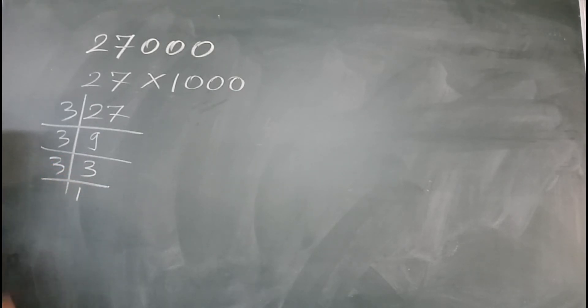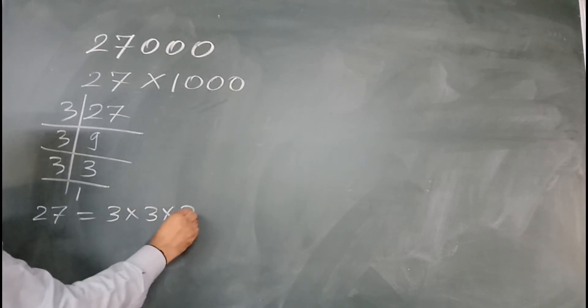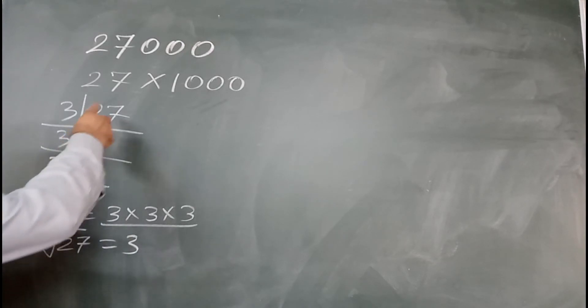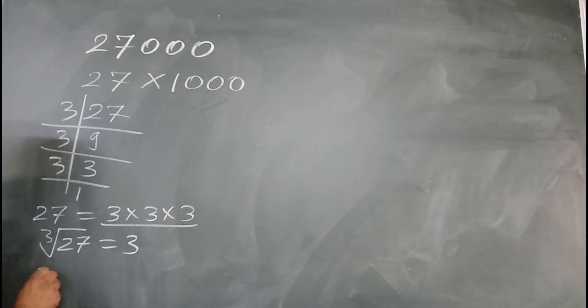9, 3, 3. So we got 27 equals 3 times 3 times 3. We have only one triplet of 3, so the cube root of 27 equals 3. And the cube root of 1000, you know well, equals 10.